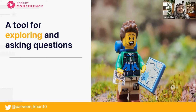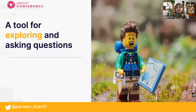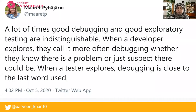I really like how this was put: a lot of times good debugging and good exploratory testing are both indistinguishable. When a developer explores, they call it debugging. Whether they know there is a problem or just suspect one, do they know exactly where the problem is? No — they try to find where it is. That's exactly what debugging is. Similarly, when a tester explores, it's close to debugging — we don't know either, but we are trying to explore and learn more about the system.